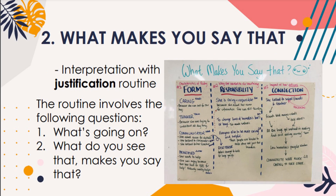Another visible thinking routine is 'What Makes You Say That?' — an interpretation with justification routine. The routine involves the questions: one, what's going on? and two, what do you see that makes you say that? This routine helps learners identify the basis for their thinking by asking them to elaborate on the thinking that lies behind their responses. When used regularly, it helps foster evidential reasoning.